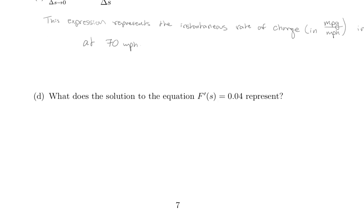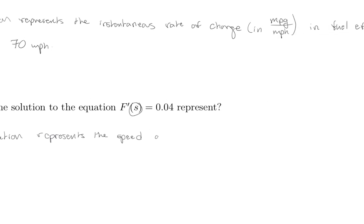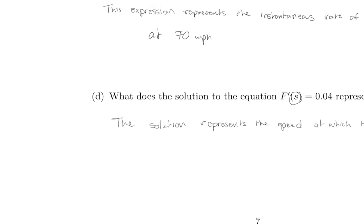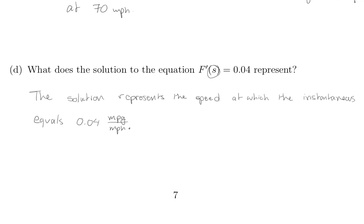Part d asks what is the solution to the equation F prime of s equals 0.04. That means s is our unknown. The solution represents the speed at which the instantaneous rate of change of fuel efficiency is equivalent to 0.04 miles per gallon over miles per hour. That speed would be given in miles per hour.